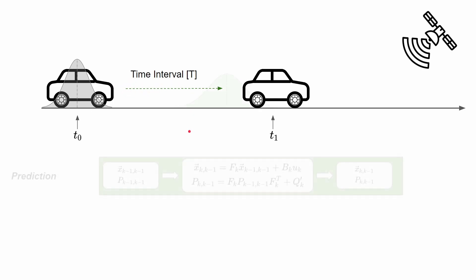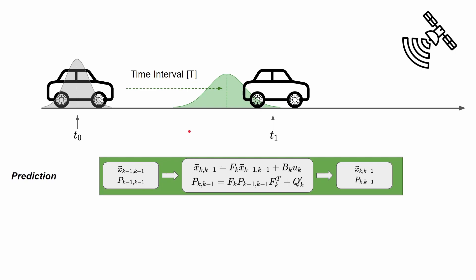The Kalman Filter has a first part which is the prediction step. The prediction step is simply the way that you make use of the system model — a model that you know and have formulated analytically based on the physical knowledge of the system you are working on, and the external inputs that are fed to this system.